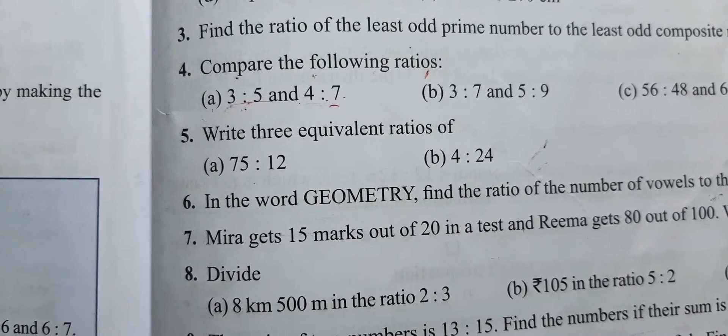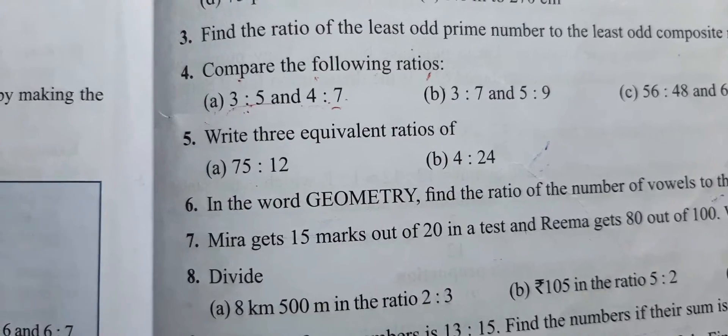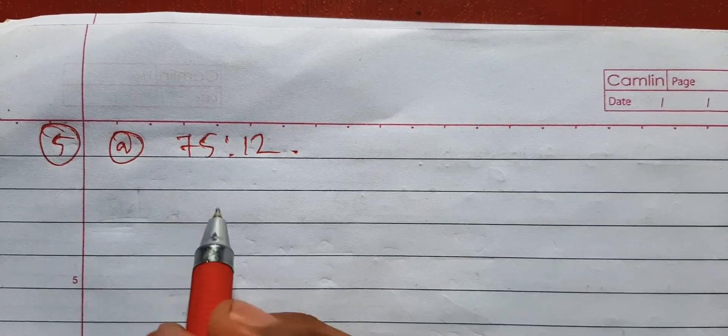We'll be doing 12.1 question number 5: write 3 equivalent ratios of 75 is to 12. So here first, what we need to do is convert the ratio into a fraction.